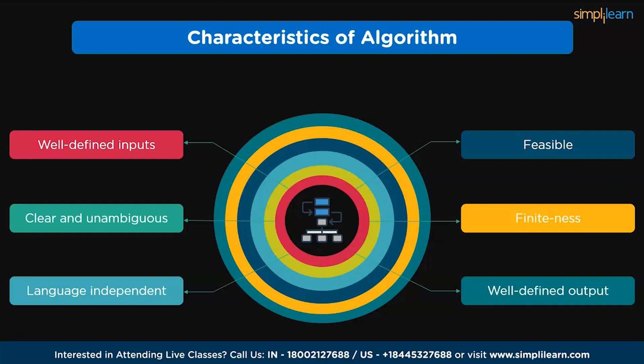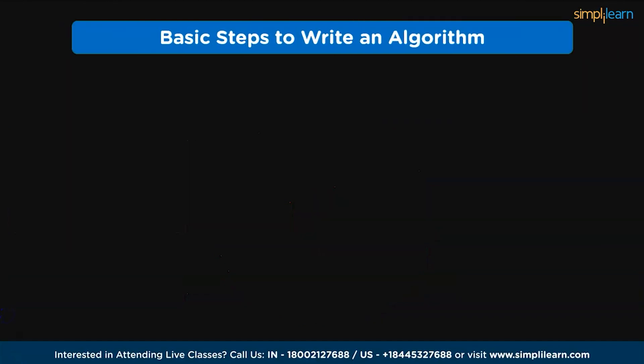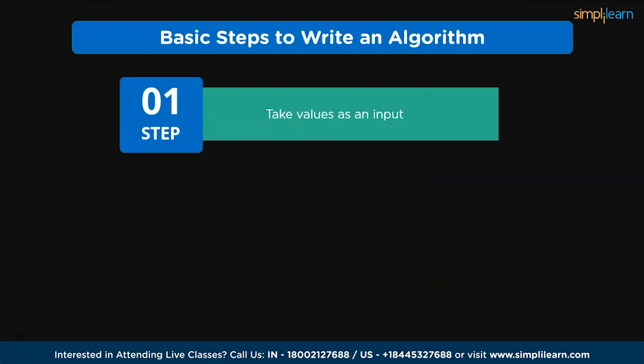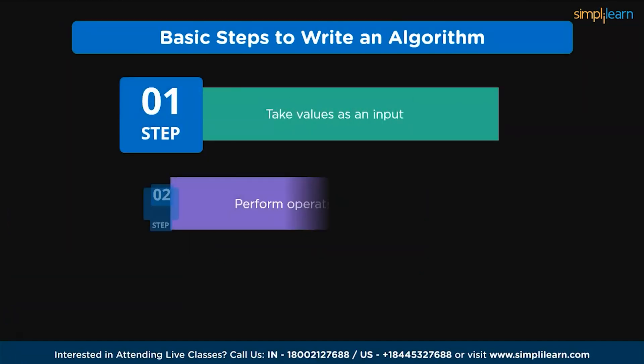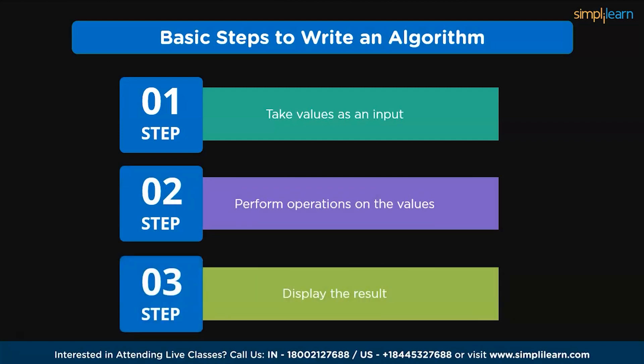Now, we know what is an algorithm and its characteristics. Now, it's time to know the basic steps to write an algorithm. The first step is, take values as an input. Then, perform operations on the values. And finally, display the result.